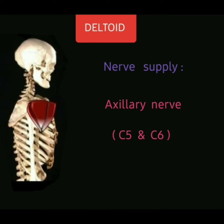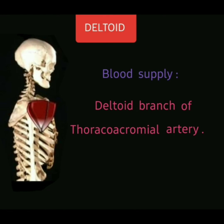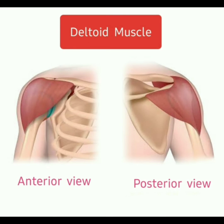The nerve supply of the deltoid muscle: the deltoid muscle is supplied by the axillary nerve, with root values cervical 5 and cervical 6. The blood supply of the deltoid muscle: the deltoid muscle is supplied by the deltoid branch of the thoracoacromial artery. This image shows the deltoid muscle from anterior and posterior views.